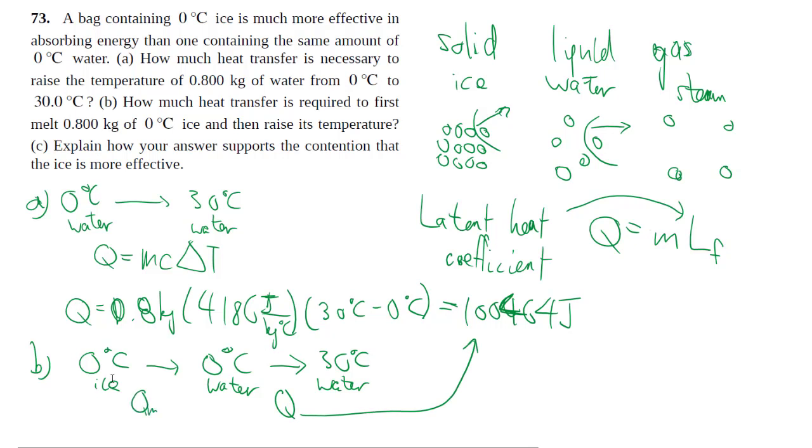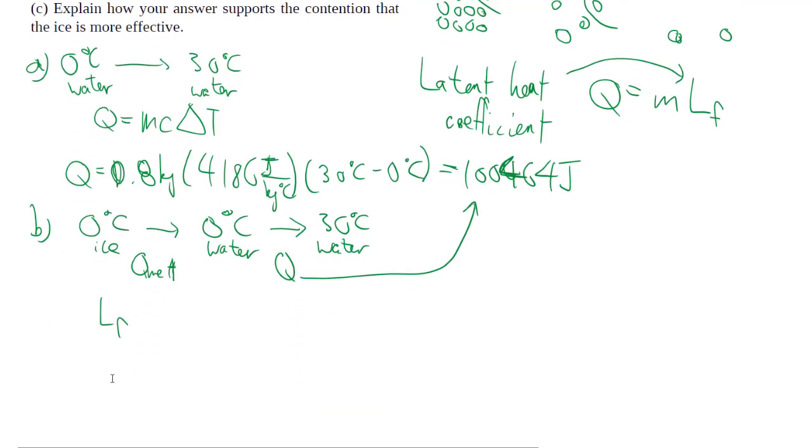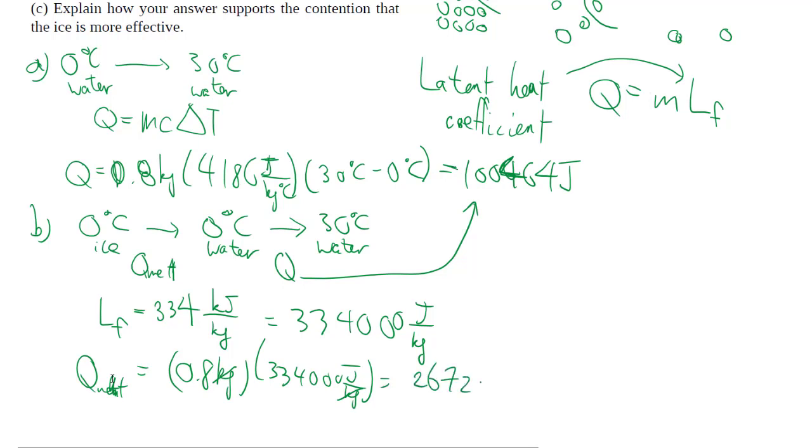So this part we already have. This part is the heat associated with the melting, which is given by M times your latent heat coefficient. The latent heat coefficient of ice and water, as you look up from the table, is 334 kilojoules per kilogram. The unit is quite simple because we're just multiplying by mass and we want joules in the end.